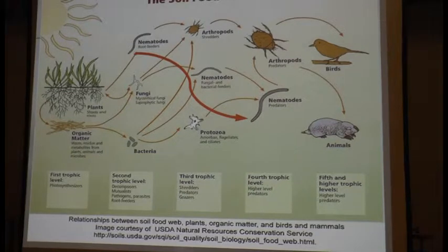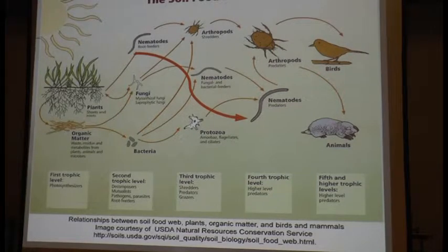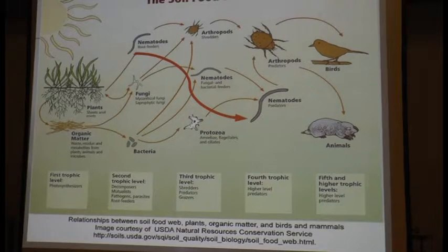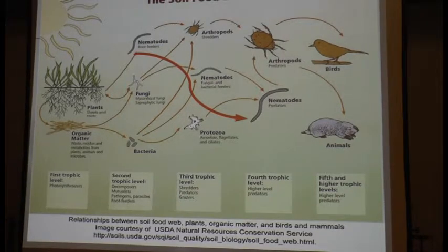This diagram shows basically the mineralization cycle — soil mineralization cycle. We want to look at the carbon and nitrogen ratios specifically. We focus on nitrogen, but it's the same concept with all the nutrients.